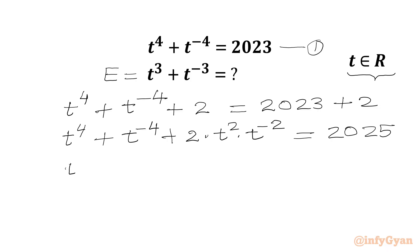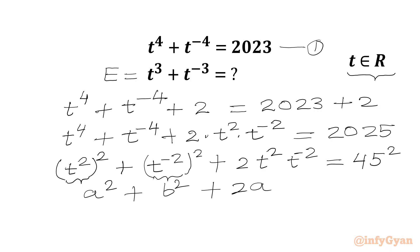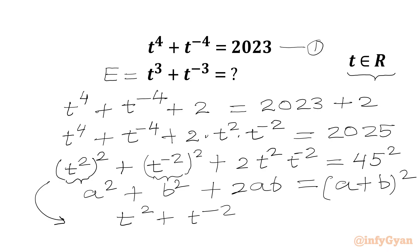Now we rewrite: t⁴ is (t²)², and t⁻⁴ is (t⁻²)². So we have (t²)² + 2·t²·t⁻² + (t⁻²)² = 2025, which is 45². If we call t² = a and t⁻² = b, this is a² + 2ab + b², which by the algebraic formula equals (a + b)². So we write (t² + t⁻²)² = 45².